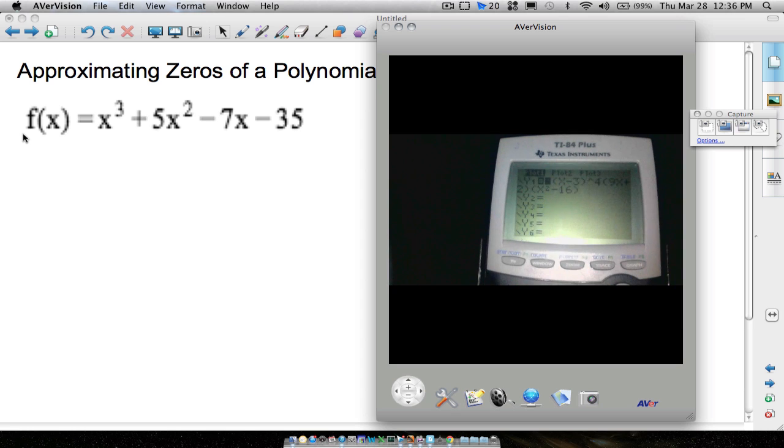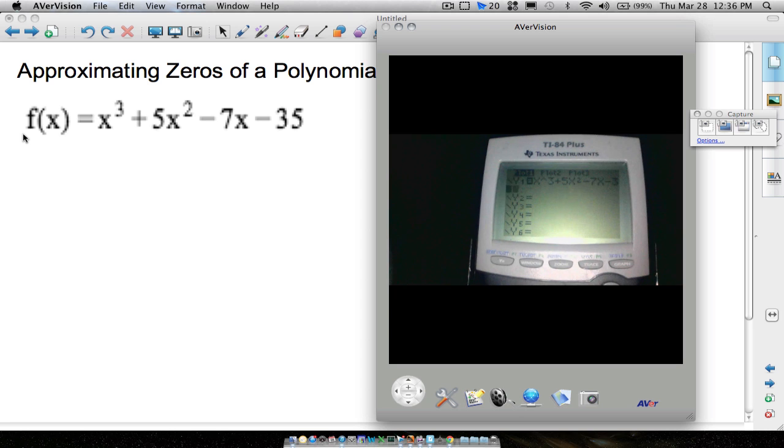The calculator is only going to let us approximate though, so unless it was an exact integer or a nice decimal fraction of some sort. But let's see what happens. Let's go to y equals and let's type in this function: x cubed plus 5x squared minus 7x minus 35.